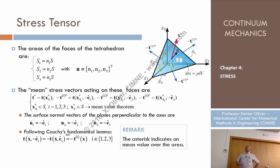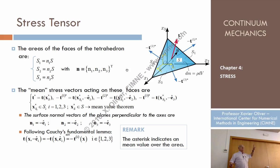This surface cuts the axes in three points, and from that I can construct this tetrahedron made by the original surface of area S and surfaces S1, S2, and S3. It is easy to prove that S1 equals S times the first component of N, S2 equals S times the second component, and S3 equals S times the third component.